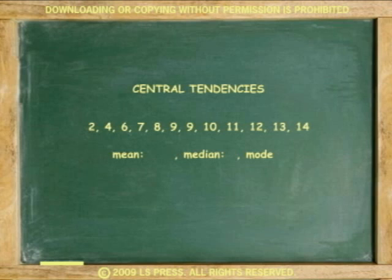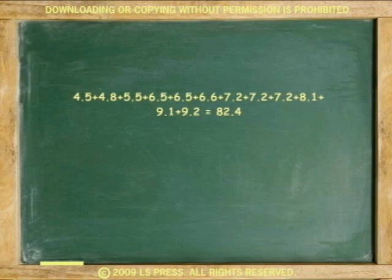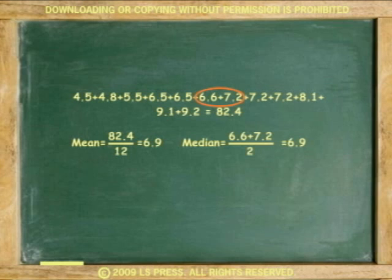For example, is the data in the previous example displaying central tendencies? The mean is 82.4 divided by 12 or 6.9. The median is 6.6 plus 7.2 divided by 2 or 6.9. The mode is 7.2.